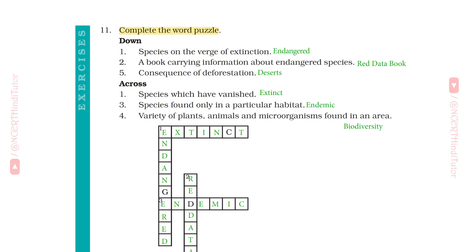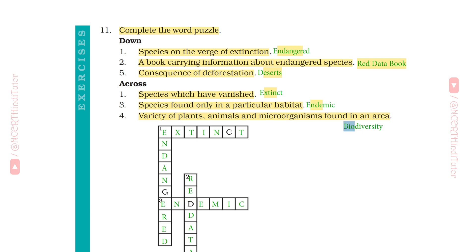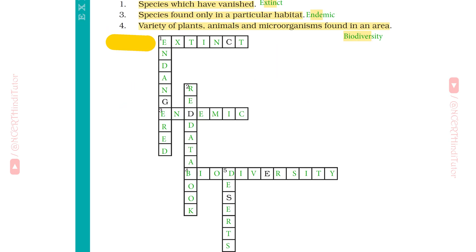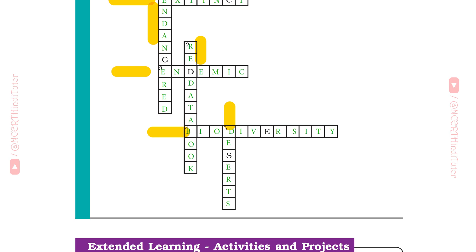Question 11: Complete the word puzzle. Down clues: species on the verge of extinction — Endangered; a book carrying information about endangered species — Red Data Book; consequence of deforestation — Deserts. Across clues: species which have vanished — Extinct; species found only in a particular habitat — Endemic; variety of plants, animals and microorganisms found in an area — Biodiversity.